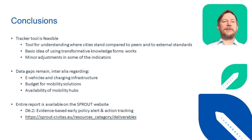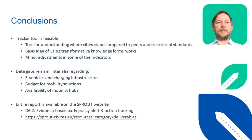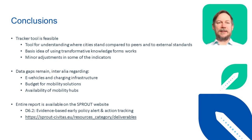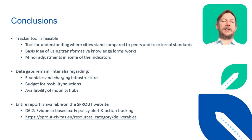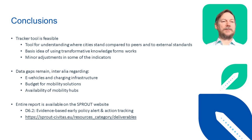To conclude: the tracker tool is feasible — it helps understand where cities stand compared to peers and external standards. Minor adjustments are required in some indicators and questions, but the basic idea of using transformative knowledge forms works. We found data gaps regarding e-vehicles and charging infrastructure, the budget for mobility solutions, and the availability of mobility infrastructures such as mobility hubs. The entire report is available on the Sprout website and is called D6.2 Evidence-based Early Policy Alert and Action Tracking. Thank you for listening.